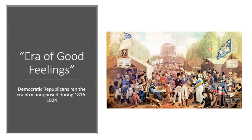With the destruction of the Federalist Party, this led to what is known as the Era of Good Feelings — a period from 1816 to 1824 in which the Democratic-Republicans ran the country unopposed in the aftermath of the War of 1812. This marked an era in American political history when there was one party leading, reflecting a sense of national purpose and desire for unity among Americans following the war.